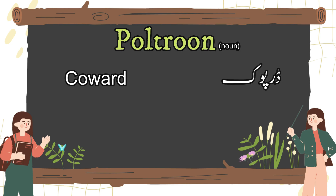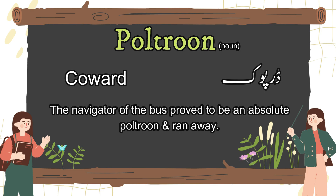Now let's use this word in a sentence to make it more clear. The navigator of the bus proved to be an absolute poltroon and ran away.